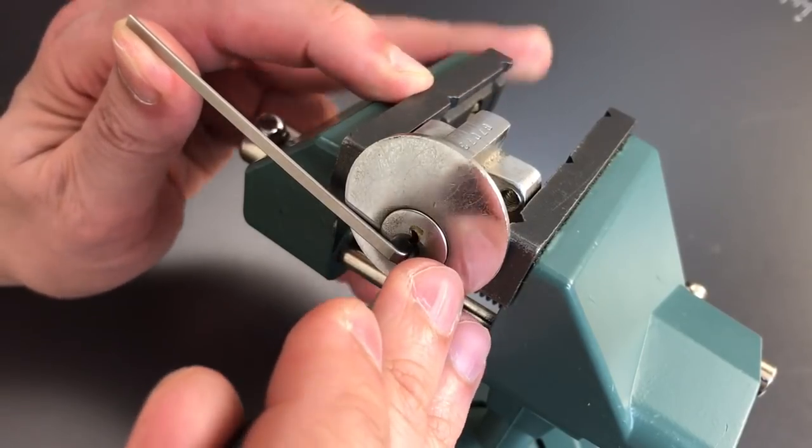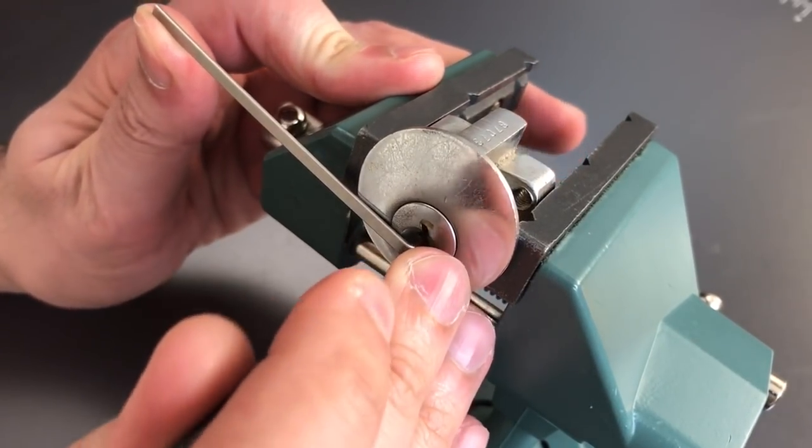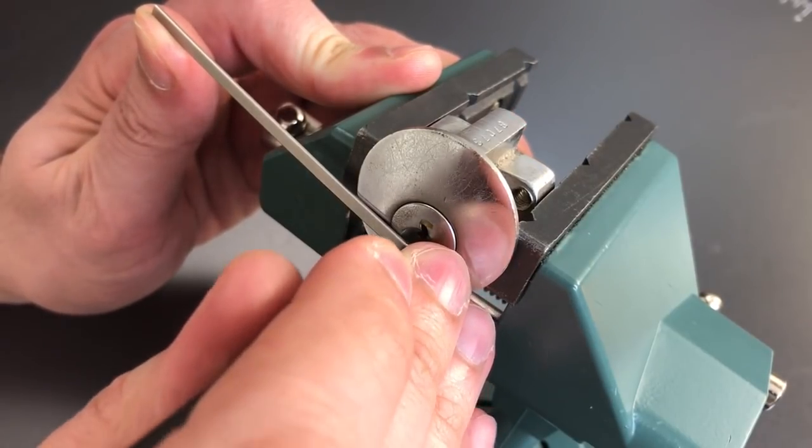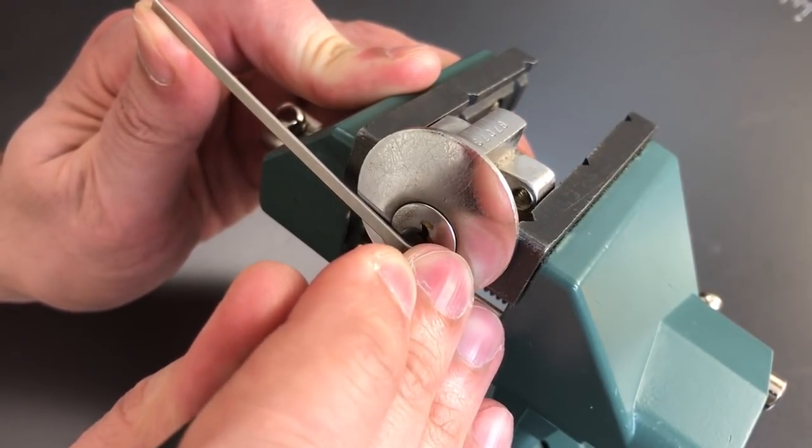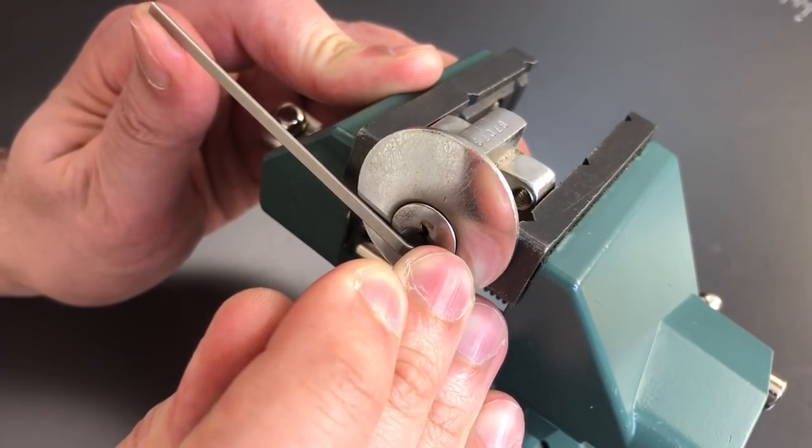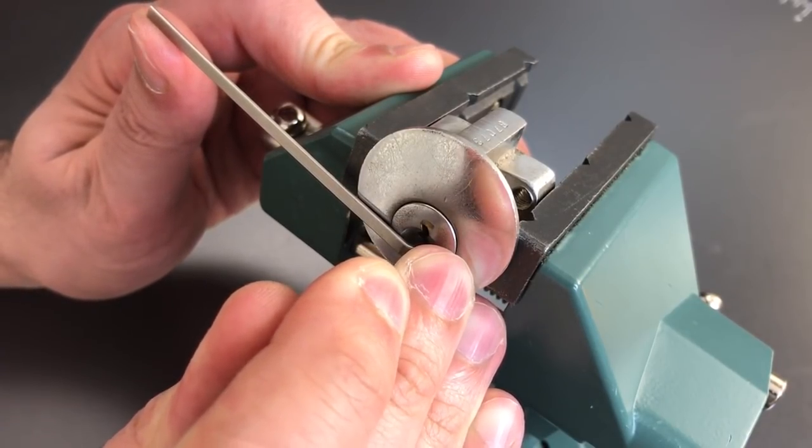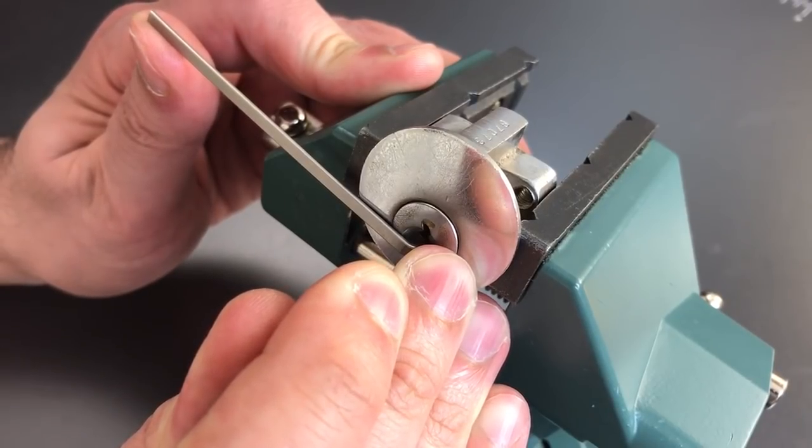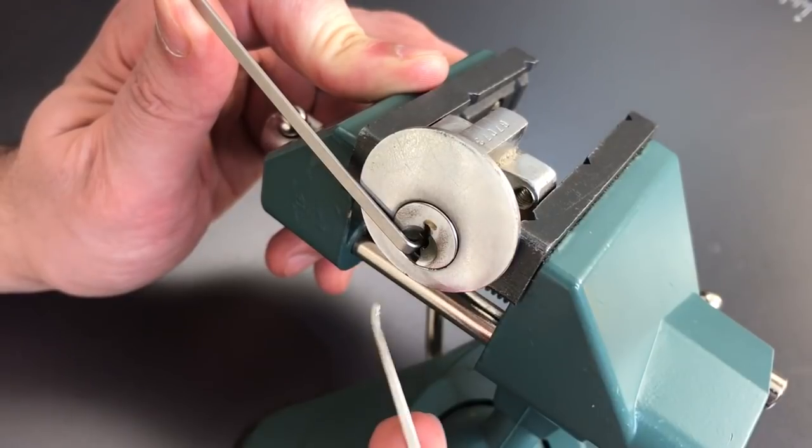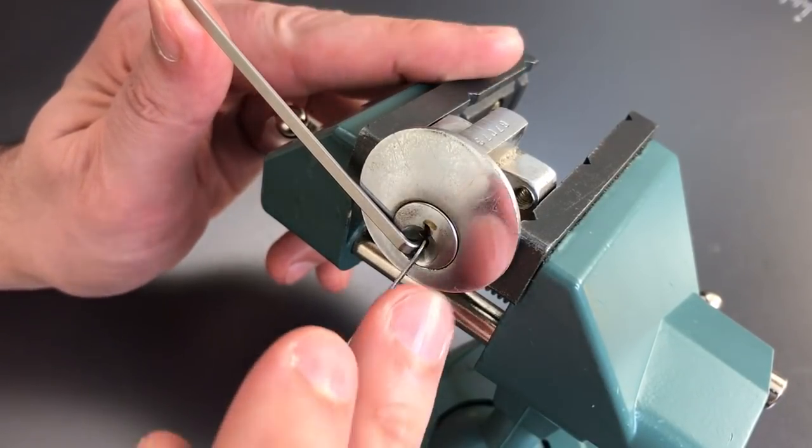Number 1 is loose. 2 is loose. 3 is loose. Same on 4. 5 is binding. Getting a little bit of counter-rotation on him. And we set 5 and got a false set on the core.